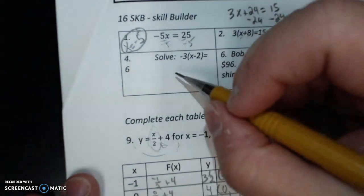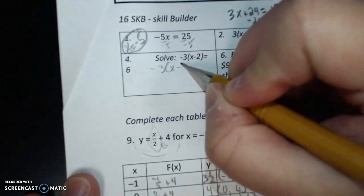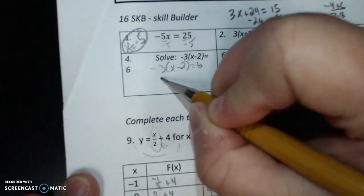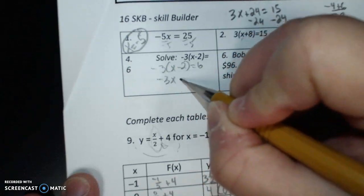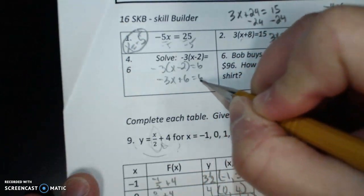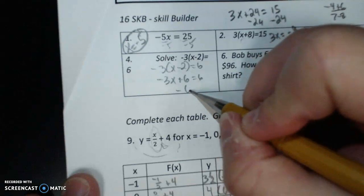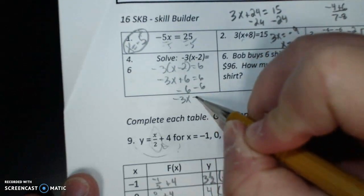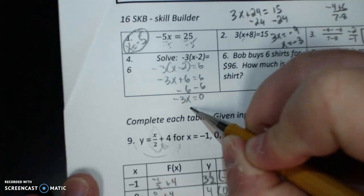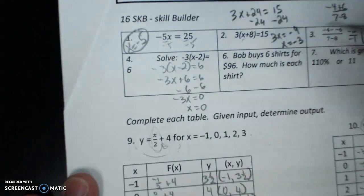Solve. Negative 3 times X minus 2 equals 6. Distribute. Negative 3X plus 6 equals 6. Subtract 6 from both sides. Negative 3X equals 0. Divide by negative 3. X equals 0.